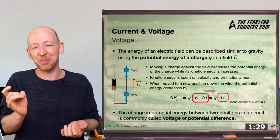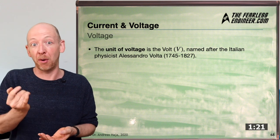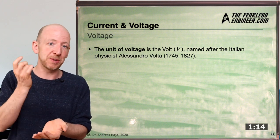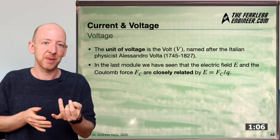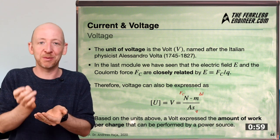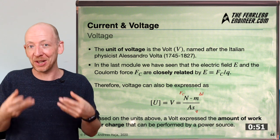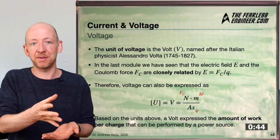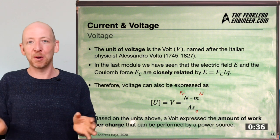When we move electrons to a new position down the wire, the potential energy is decreased, described by an equation very similar to that of the apple. By replacing mass with charge and gravity with the electric field, we get the simple product of Q, E, and delta L. This gives us our definition of voltage: the change of potential energy of a charge between two positions in a circuit. So voltage is the product of relative length and electric field. This is really worth staying with — it's the last major concept before the summary.